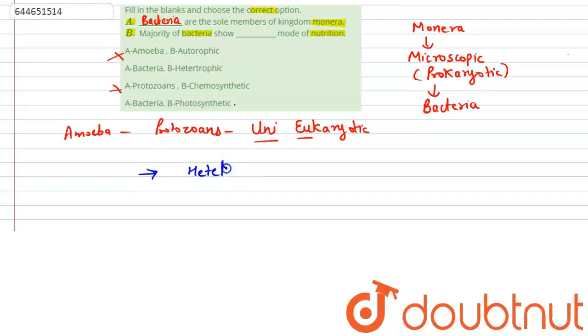So when we talk about heterotrophic mode of nutrition, heterotrophic means depending upon another organism. These heterotrophic organisms depend upon other organisms for their food, and these other organisms can be dead - they can depend upon dead organic matter - or they can depend upon another organism for the food material.